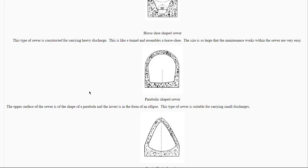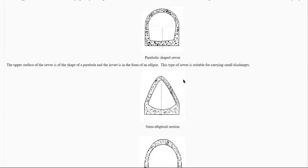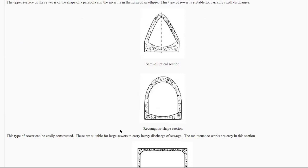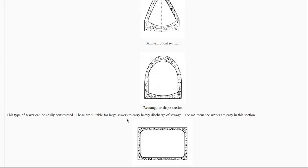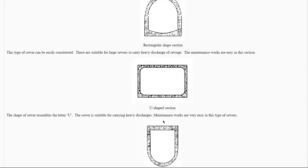The parabolic-shaped sewer has an upper surface in the shape of a parabola, in the inverted form of an ellipse, and is suitable for carrying small discharges. Rectangular sewers are suitable for large sewers carrying heavy discharges, and maintenance is easy. The U-shaped sewer is also suitable for carrying heavy discharges, and maintenance work is very easy in this type.